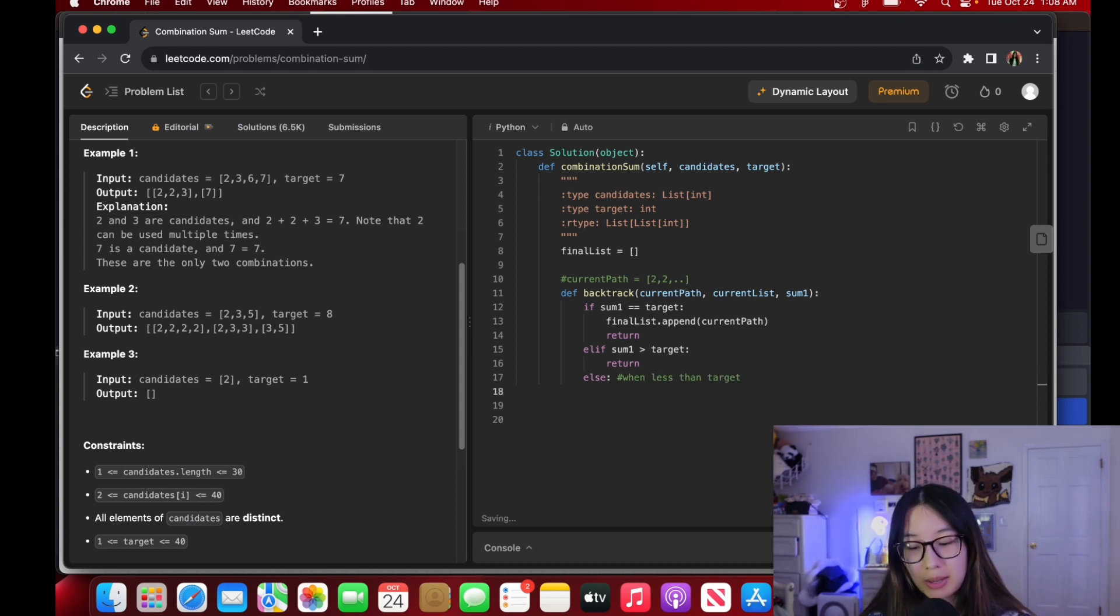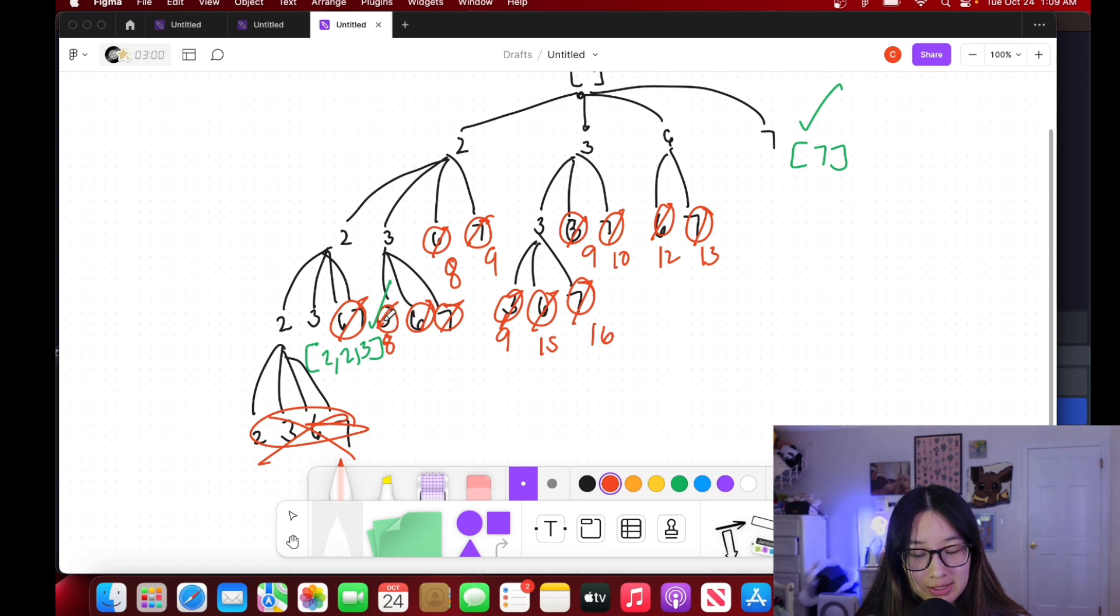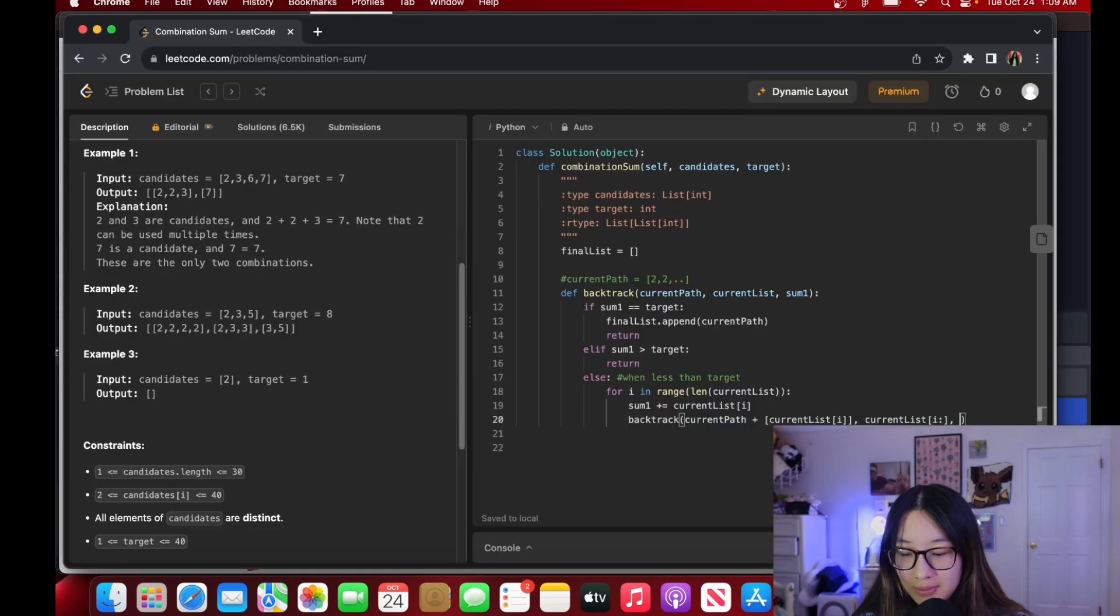We want to iterate through our current list. For i in range length of current list, we want to add to our sum1, sum1 plus equals current list i. We grab the current value that we're at and then we can start to backtrack. For our backtrack we want to add current path plus current list i, and then from there we do current list, and this is where we slice starting from the current index that we're at. For the backtracking aspect of it, we remove the element that we just put in.